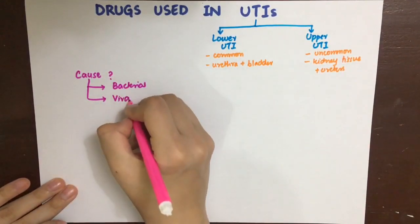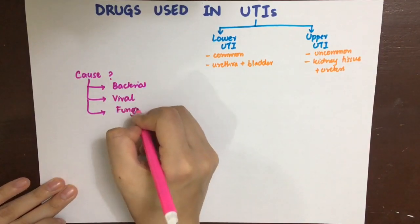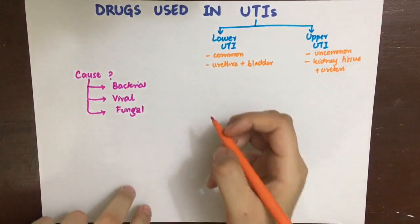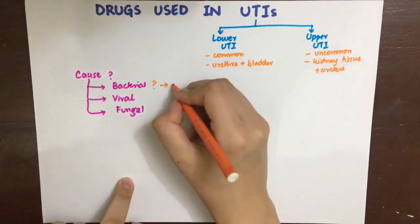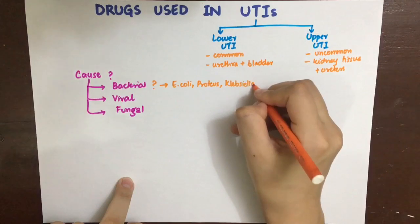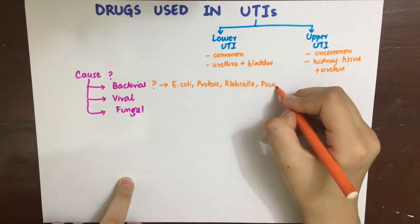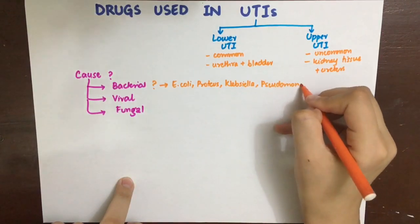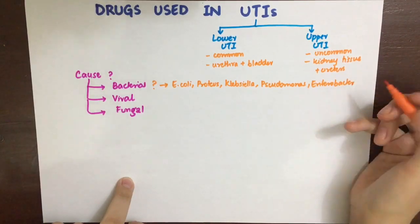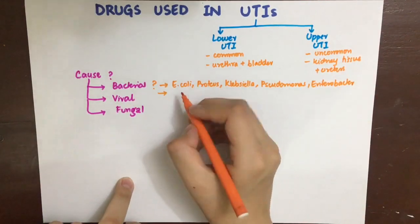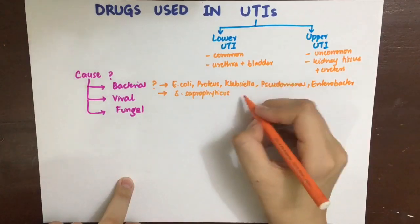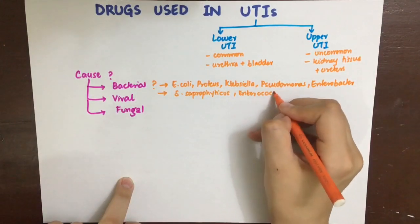UTIs can be caused by bacterial, viral, or fungal infiltration. The most common bacterial causes are gram-negative bacteria: E. coli, Proteus, Klebsiella, Pseudomonas, and Enterobacter.